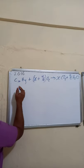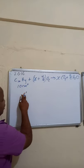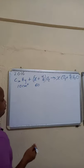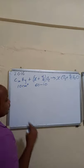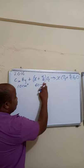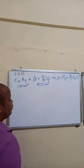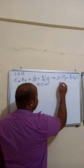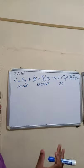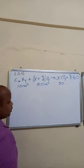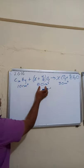We have 10 cm³ of the hydrocarbon reacting with 60 cm³ of oxygen. Remember, 10 cm³ of oxygen remained, so the amount of oxygen used is 50 cm³. And CO₂ produced is 30 cm³, because after the reaction we had 40 cm³ of gas and 10 cm³ was oxygen, leaving 30 as CO₂. So our three volumes are 10, 50, and 30.